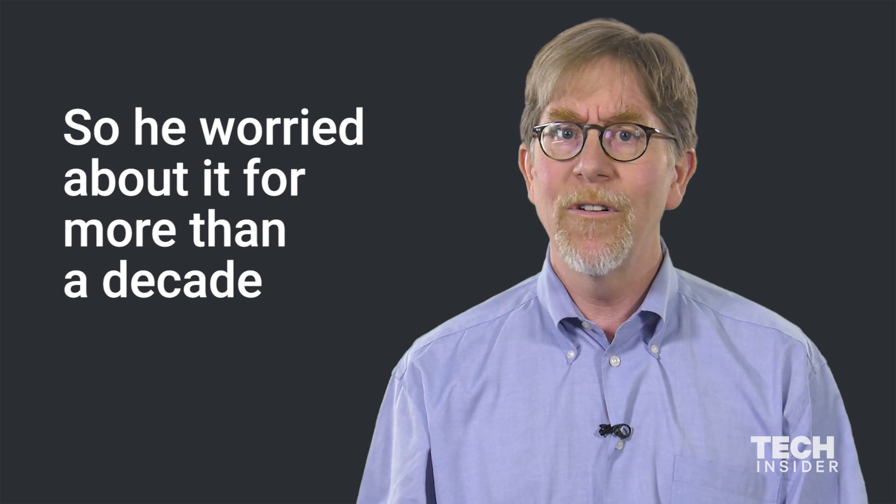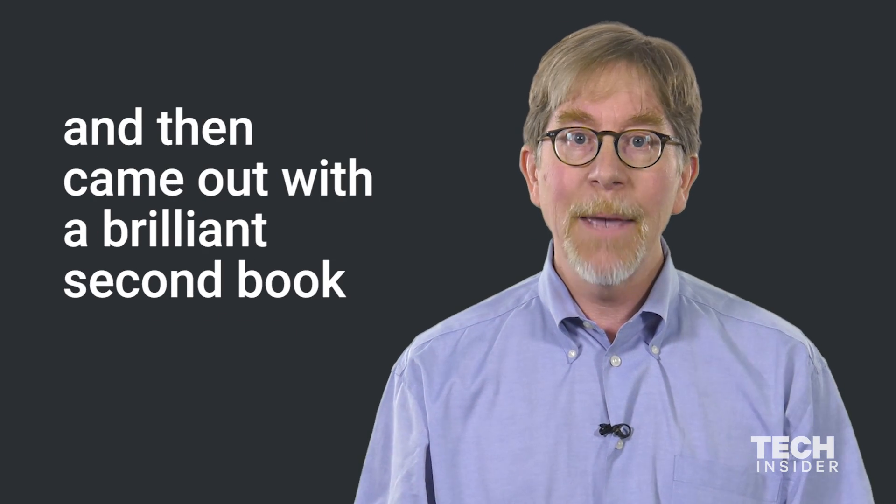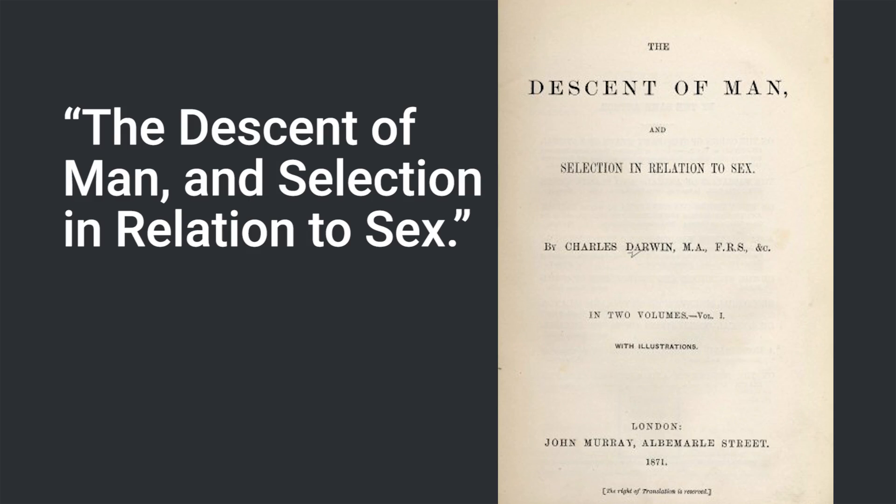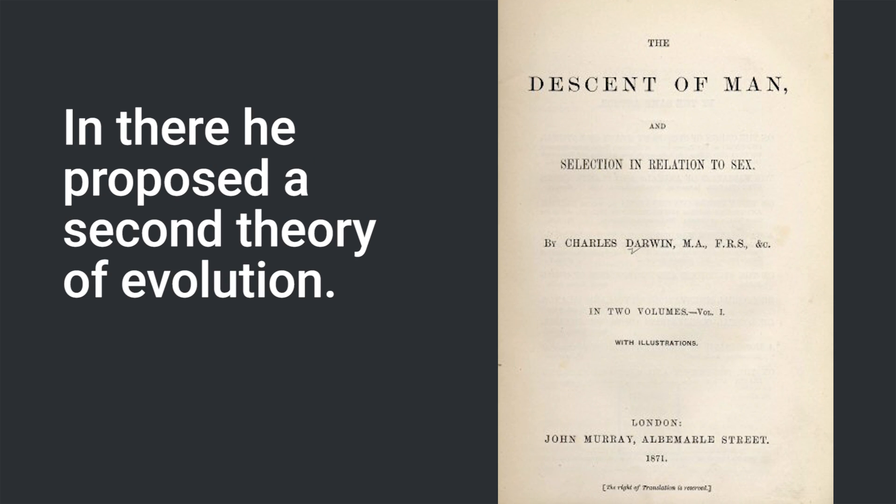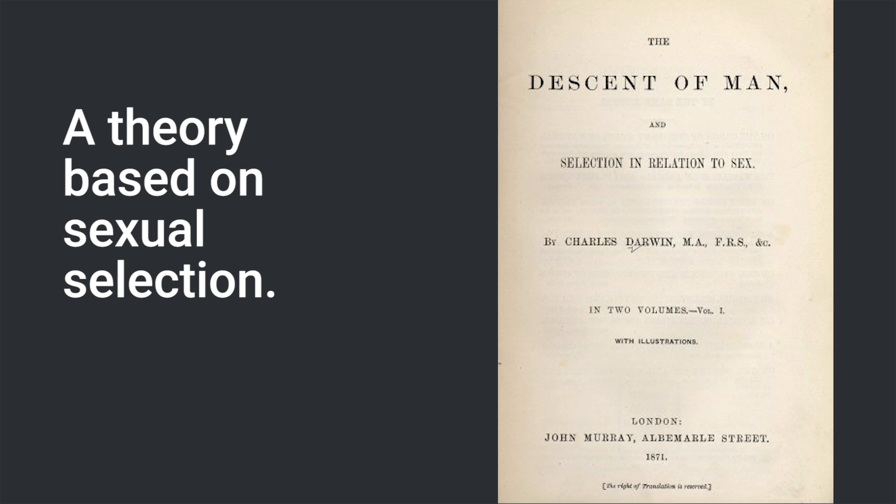So he worried about it for more than a decade and then came out with a brilliant second book, The Descent of Man and Selection in Relation to Sex. And in there he proposed a second theory of evolution, a theory based on sexual selection.